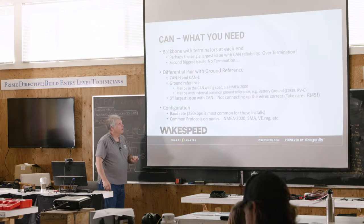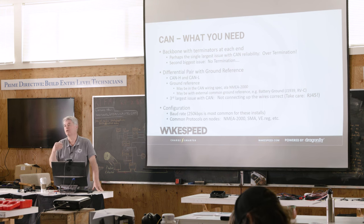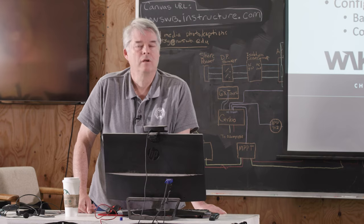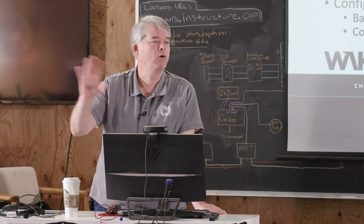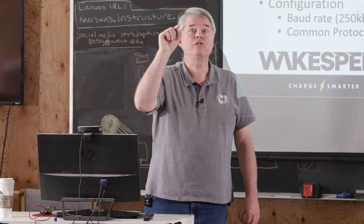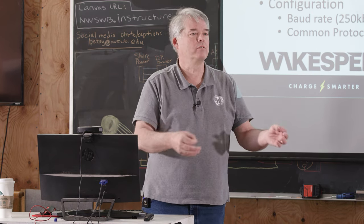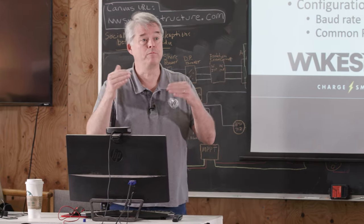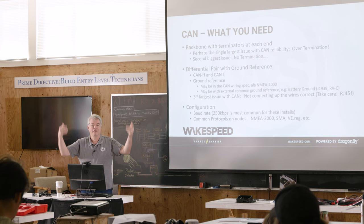Another practical detail: baud rate. NEMA 2000, RVC, and default J1939 all run at 250k baud. However, on the Victron, the BMS CAN port — where you connect third-party batteries using the Luxe protocol or Chinese battery protocols — typically runs at 500k. The Wake Speed allows you to change baud rates. Make sure the baud rates are the same on all devices; if one is speaking faster than the other, it just won't work.